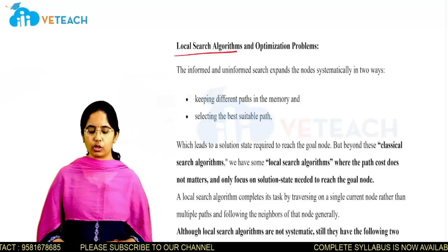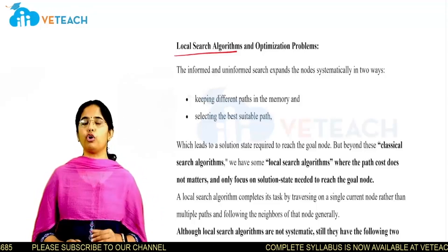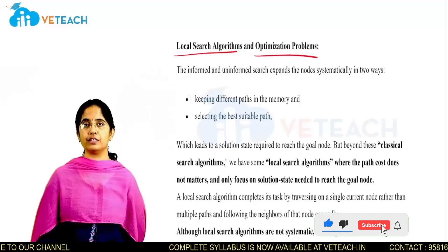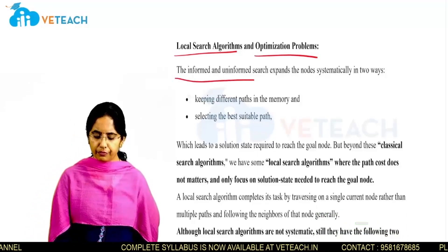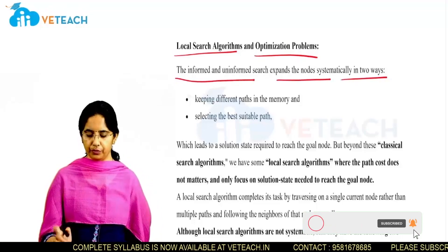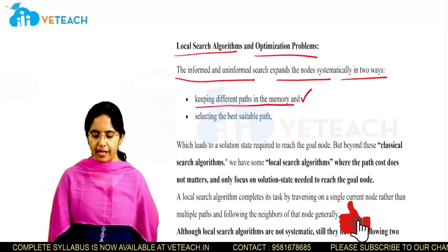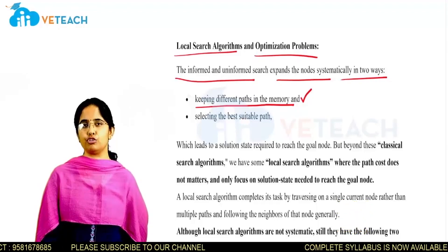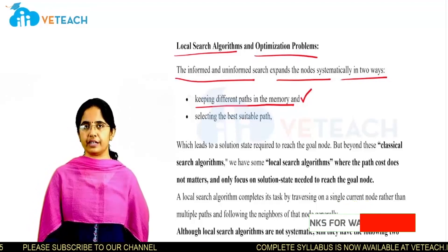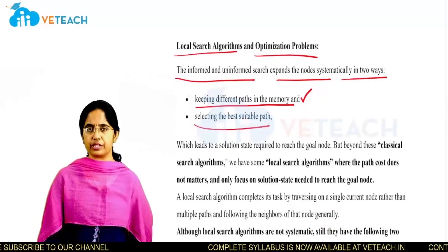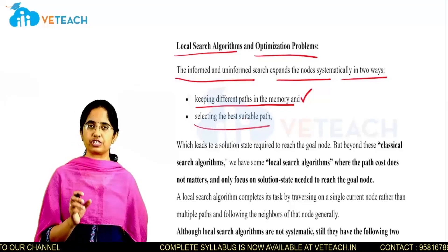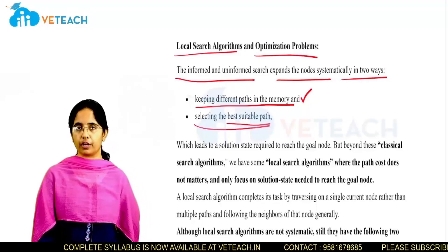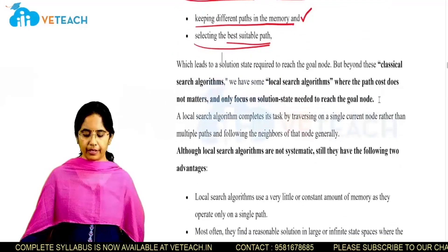Now we will discuss the other type of search problems to find a solution in AI — these are called local search algorithms. We also look at how to optimize them to find a solution in less time, which are considered optimization problems. In informed and uninformed search, nodes are expanded systematically: either by keeping different paths in memory, as in BFS and DFS using stacks and queues, or by finding the best path from root node to goal node.